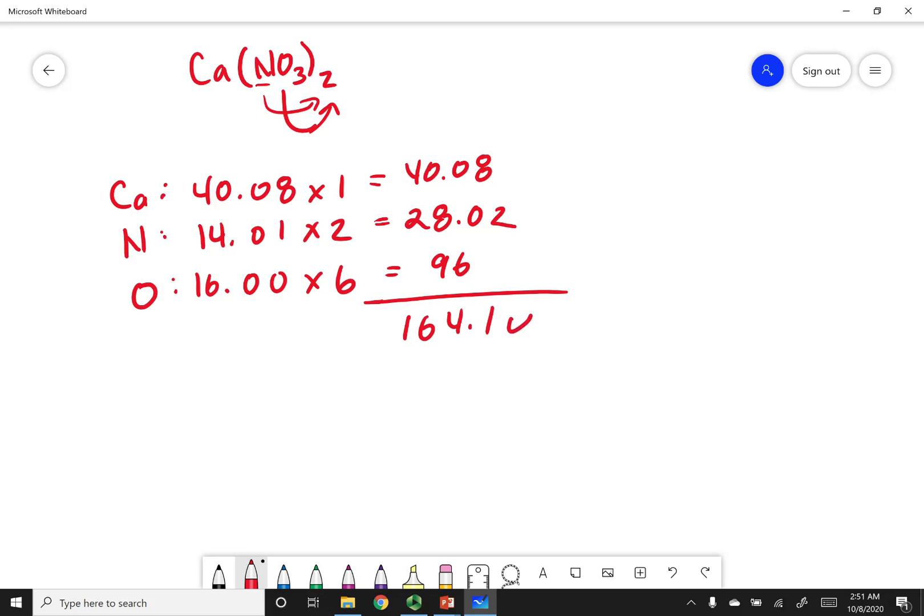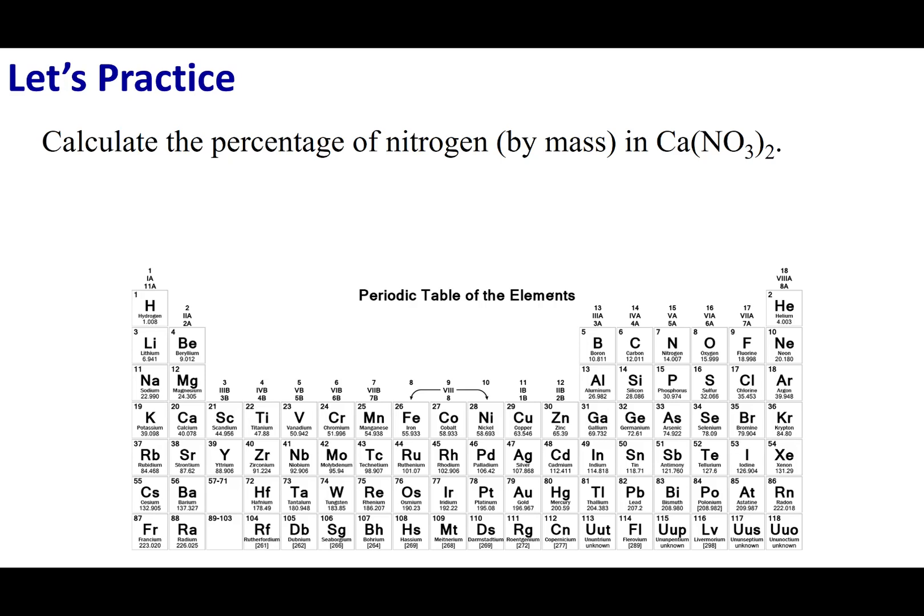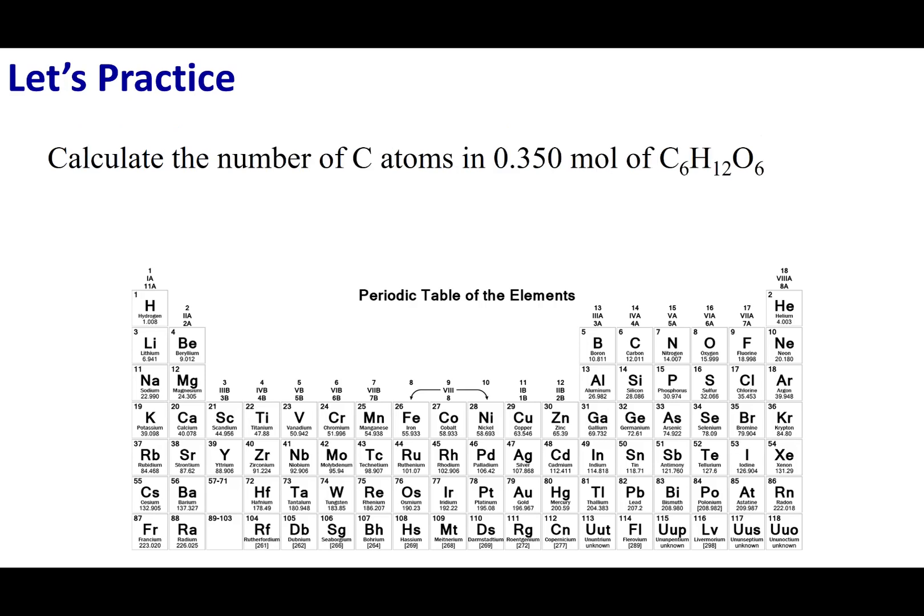Now what I was interested in is I was interested in nitrogen. So nitrogen, what I can see the total contribution of nitrogen is 28.02. I'm going to divide it by the total formula weight and I'm going to times this by 100% and what I get is around 17.07% nitrogen content. All right general people let's do one more practice question.